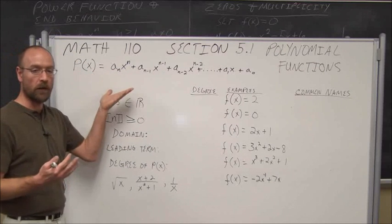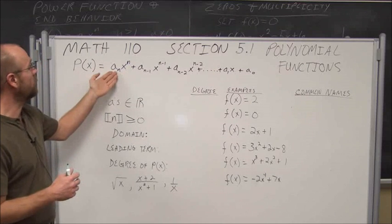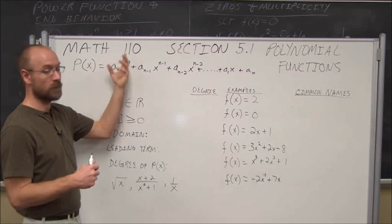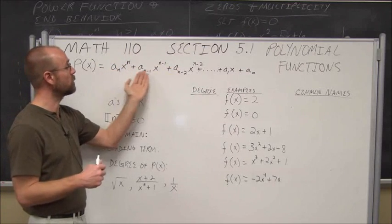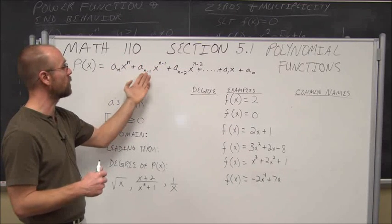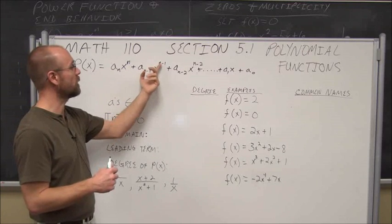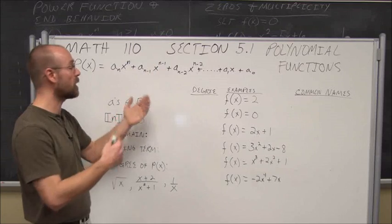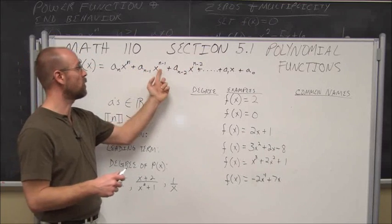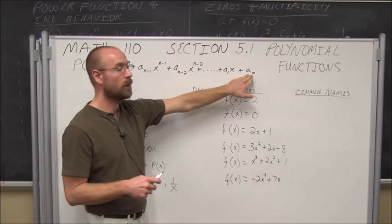If we're looking at a polynomial, a polynomial appears in a general form where we have a coefficient of x to the nth power, where n is the highest power. It's written in descending order, where each subsequent term is one less than the previous power, with a corresponding coefficient sharing the same subscript as the power, down until we get to a constant.